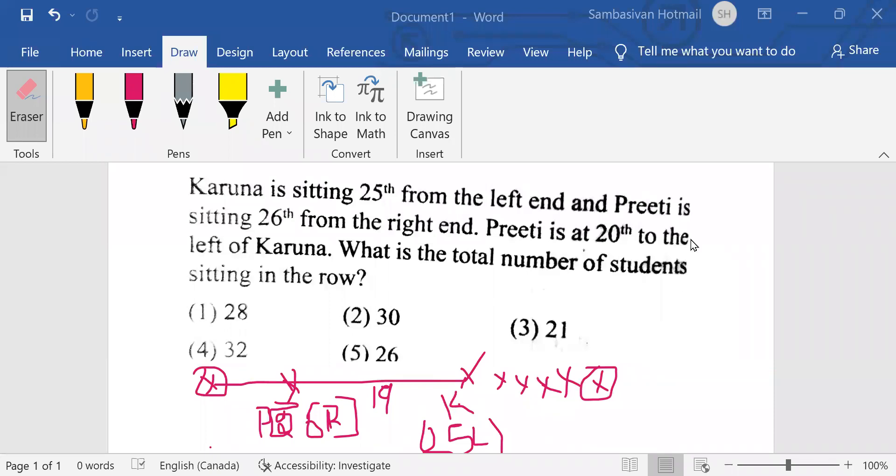You may not be given a lower mark just because you have low services. This is in respect of a question a candidate has asked in a Telegram forum. Karuna is sitting 25th from the left end. You must have seen the type of video is going on now.